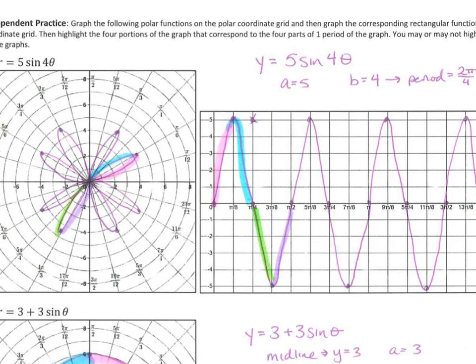If you look at the rectangular graph that goes along with that first polar coordinate in just one period, meaning just one repetition of the graph starting from here to here, that's one period of this graph. If you highlighted more than that, obviously that's fine.